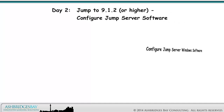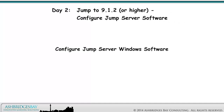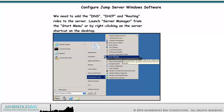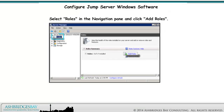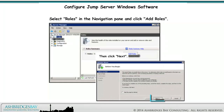First, we need to configure the Jump server Windows software: DHCP, DNS, and routing. We need to add the DNS, DHCP, and routing roles to the server. Launch Server Manager from the Start menu or by right-clicking on the server shortcut on the desktop. Select Roles in the navigation pane and click Add Roles, then click Next.